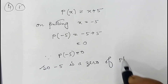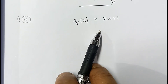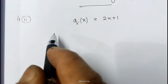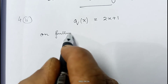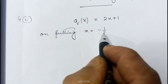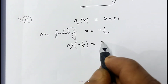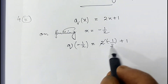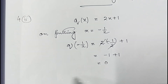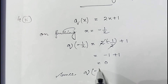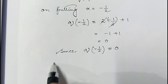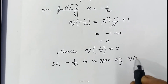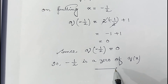In the second part of question 4, verify that minus half is a zero of q(x) = 2x plus 1. On putting x equals minus 1/2, q(minus 1/2) equals 2 into (minus 1/2) plus 1. The 2 and 2 cancel, leaving minus 1 plus 1, which equals 0. Since q(minus 1/2) equals 0, minus 1/2 is a zero of polynomial q(x). The last part of question 4 you can do yourself.